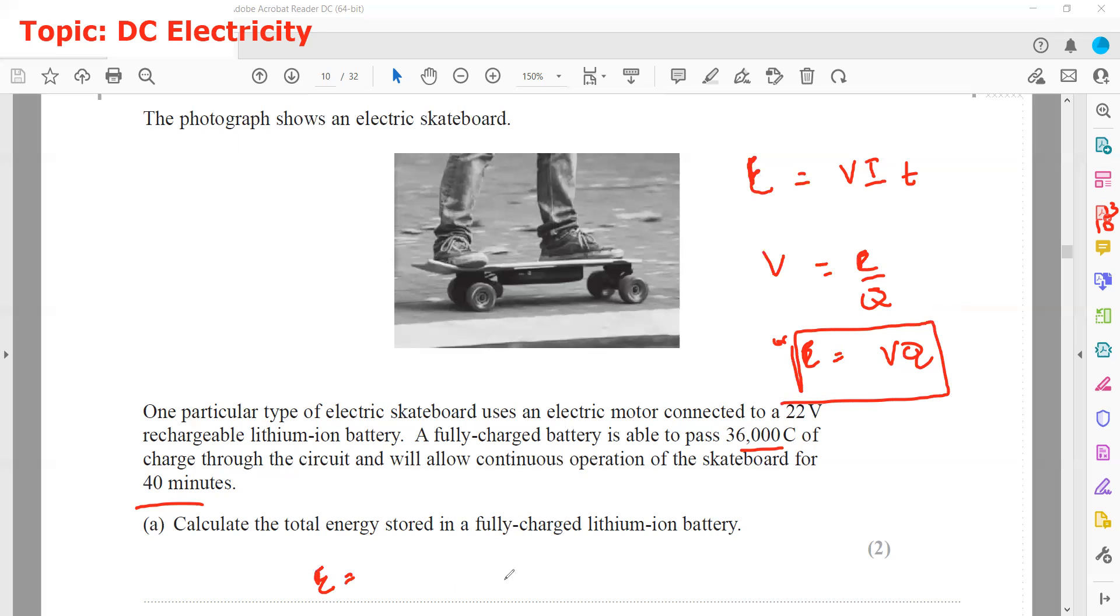So energy equals voltage which is 22 volts. The total voltage here is 22 and the charge is 36,000. So 22 multiplied by 36,000 will give us 7.92 × 10^5 joules of energy. This is the energy stored in the lithium-ion battery.